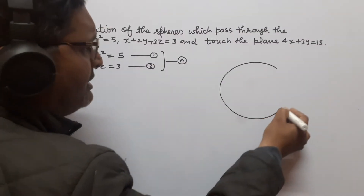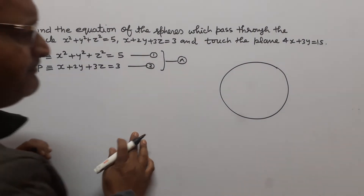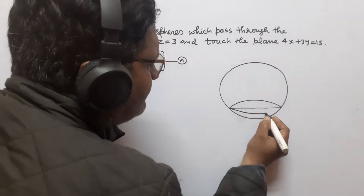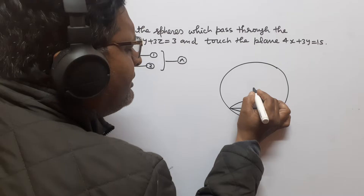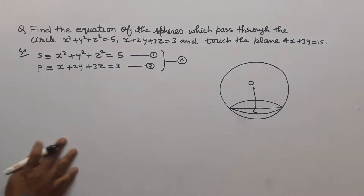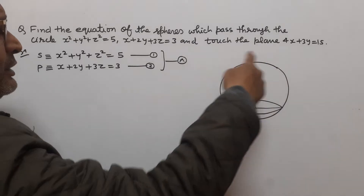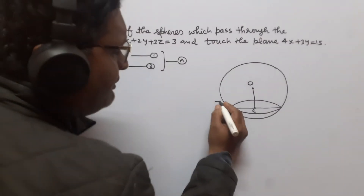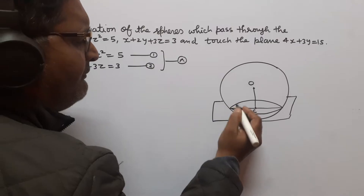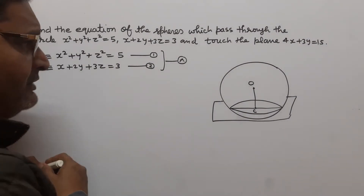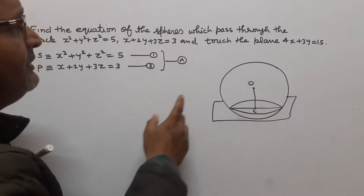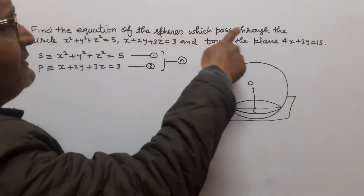Here we draw a diagram: this is the circle, here O is the center of the sphere, and C is the center of the circle. Here is the center of the sphere, and this is the plane. When we take the section of this sphere by the plane, we get this circle. So here we have to find the equation of the sphere which passes through this circle.